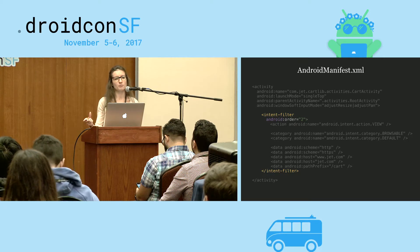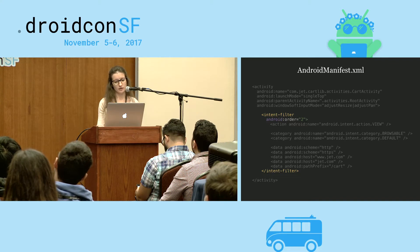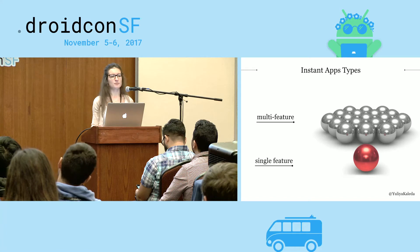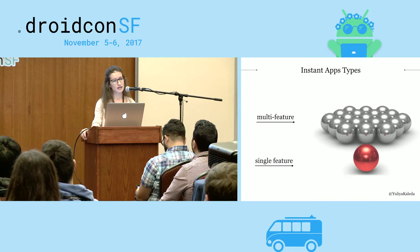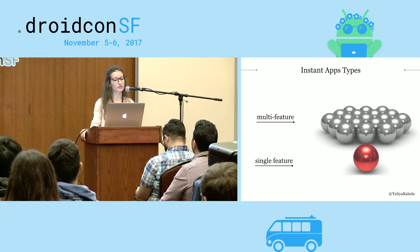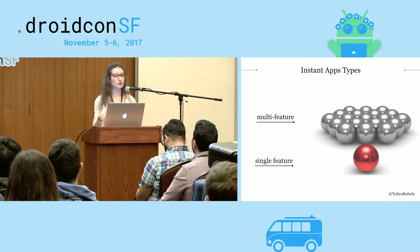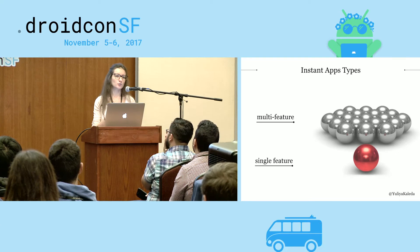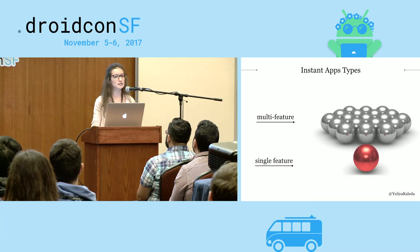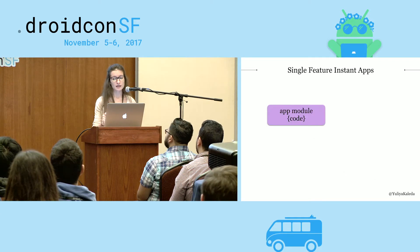To tell the system which activity will get launched over another and take precedence, you specify Android Order. The activity with the higher order number will get launched over the other. There are two approaches to building Instant Apps: a single-feature Instant App and a multi-feature Instant App. Multi-feature Instant App focuses on building independent components that coexist next to each other, while single-feature Instant App is about building just one foundation. Let's start with the easiest approach — single-feature Instant App.